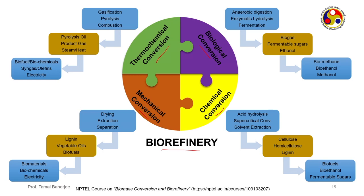Thermochemical conversions involve gasification, pyrolysis, and combustion to produce bio-oil, product gas, and steam, which are further processed to biofuel, syngas, olefins, and electricity. Mechanical conversion involves drying, extraction, and separation to produce lignin, vegetable oil, and biofuels like ethanol, and from there biomaterials, biochemicals, and electricity. Chemical conversion — acid hydrolysis, supercritical conversion, solvent extraction — produces cellulose, hemicellulose, and lignin, which can further be converted to biofuel, bioethanol, and fermentable sugar.